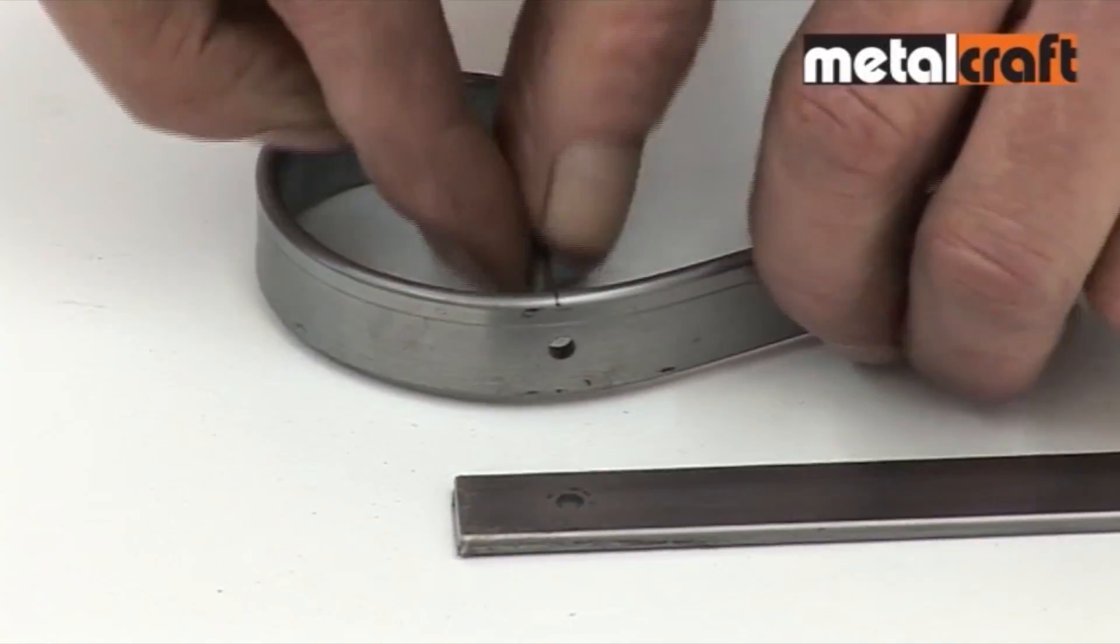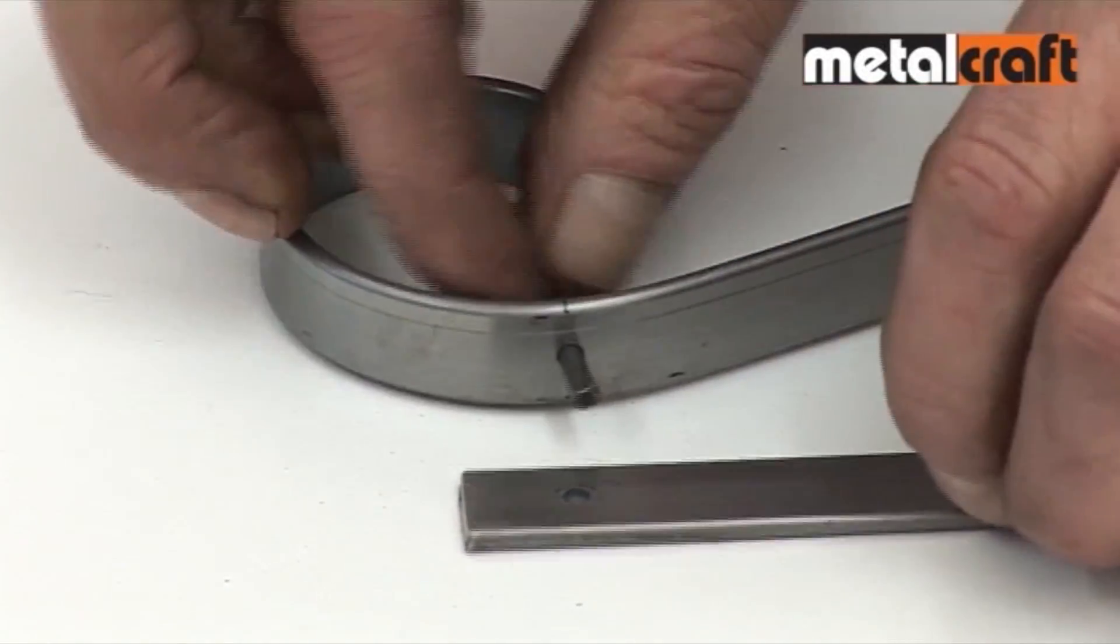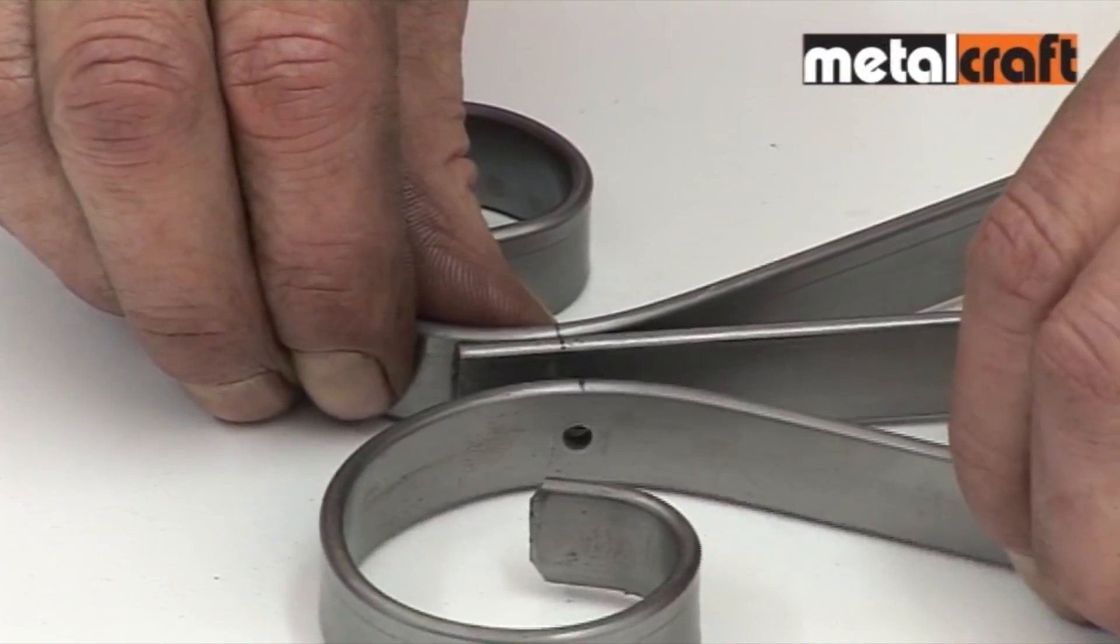Once you have marked and punched the required holes on the punch and shear tool, you pop in one of our rivets and the metalwork is then ready for riveting.